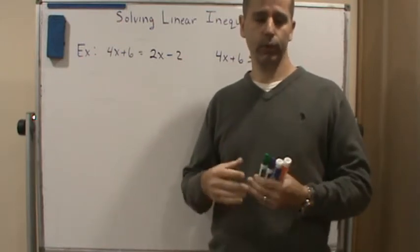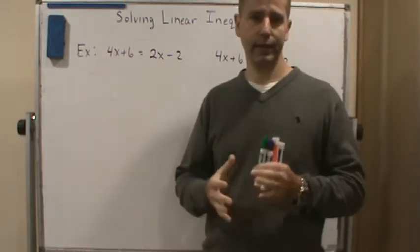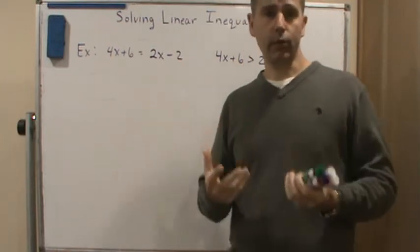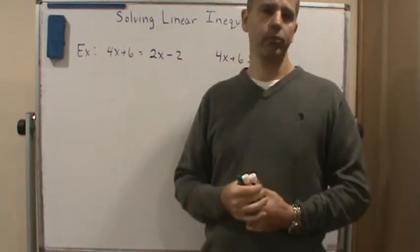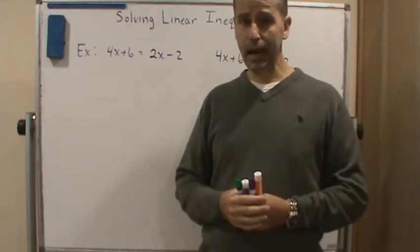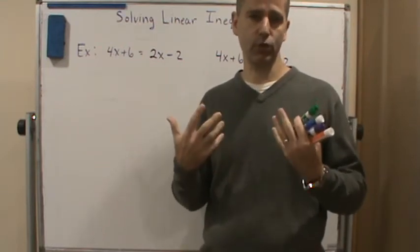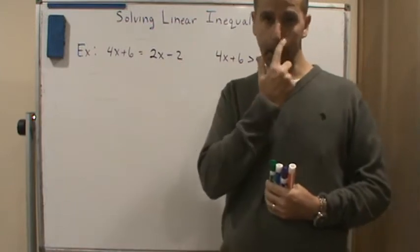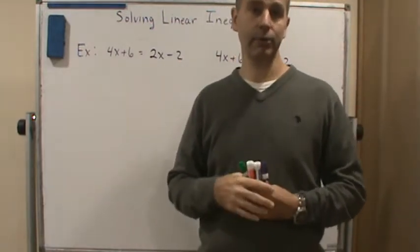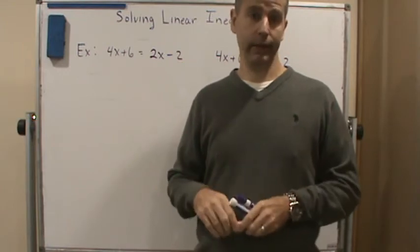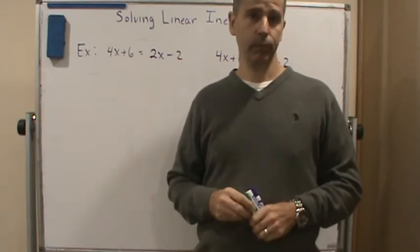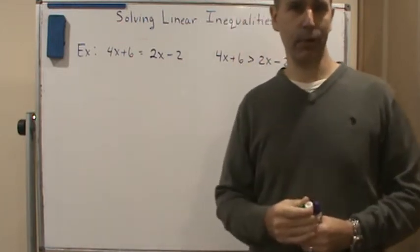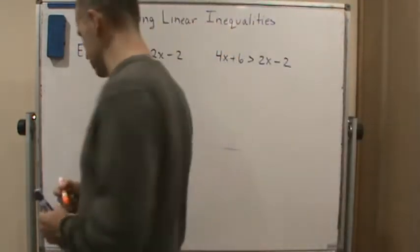So what's an inequality? We talked about inequalities before, so we know that it's going to be a set of numbers or a set of solutions. Solving linear inequalities is very similar to solving equations, except the difference is when you solve an equation, you get one answer. A linear equation will give you one answer. When you solve a linear inequality, you will have possibly an infinite number of answers. In most cases, you're going to have an infinite number because it's going to be a set of numbers.